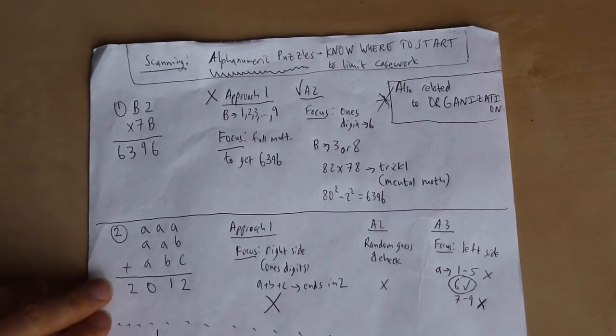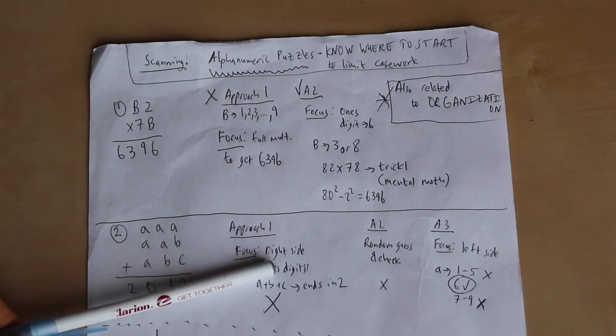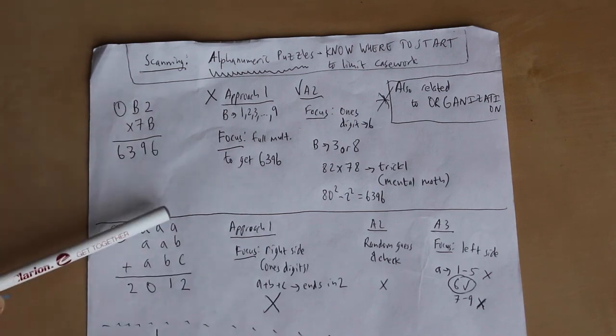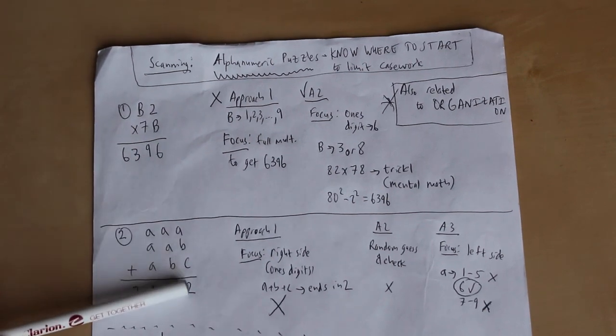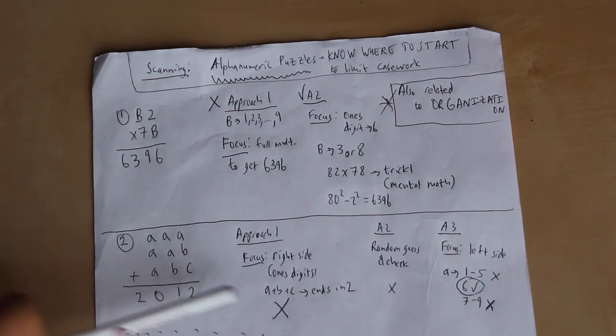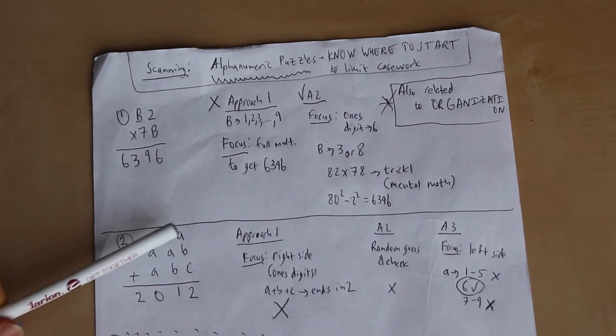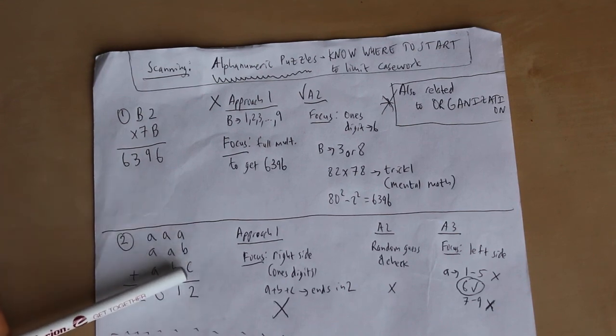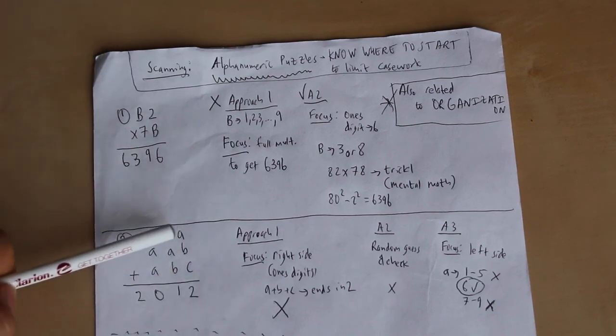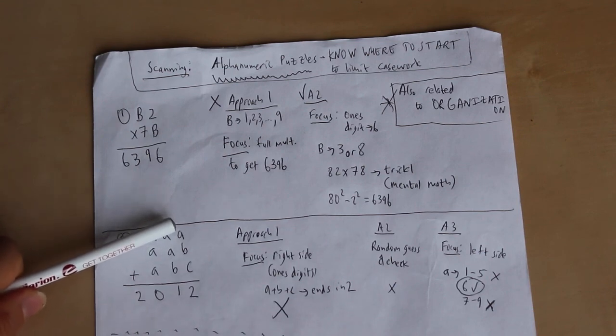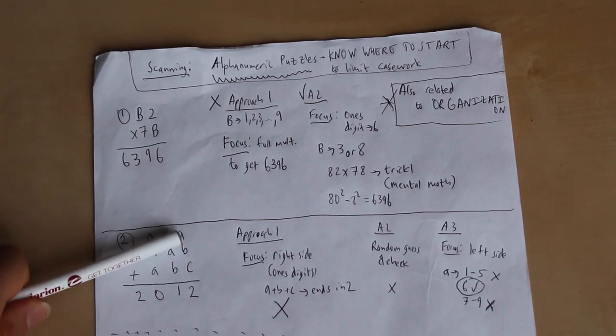All right. So approach one might be focused on the right side. So maybe from the first problem, you're thinking, well, A plus B plus C, let's start with the ones digit of a two. But the problem with doing this is that there are so many possibilities that end in two. For example, it could be zero, zero, two, or one, one, zero. It could even be like eight, four, zero, because that would be a 12 and something would carry over. So the bottom line is you're going to have dozens of possibilities if you do it this way.